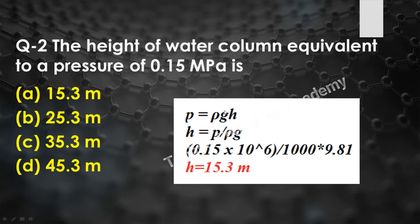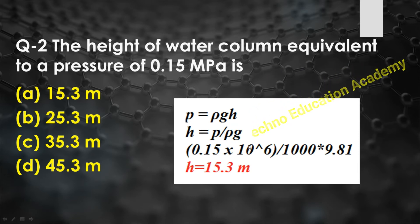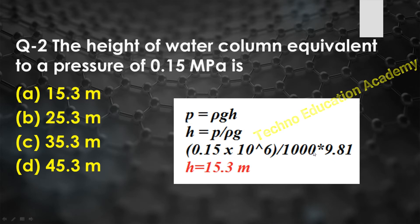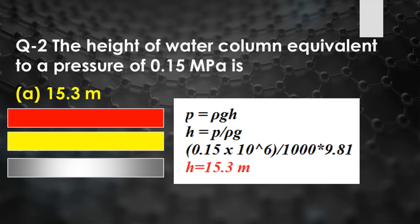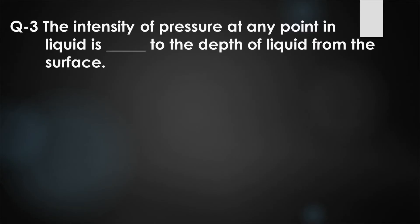According to the hydrostatic law, p = ρgh, rearranging gives h = p / (ρg). The pressure is 0.15 MPa = 0.15 × 10⁶ Pa. Density of water ρ = 1000 kg/m³, g = 9.81 m/s². Simplifying: h = 15.3 meters. So the right answer is option A, 15.3 meters.